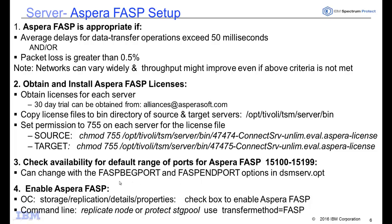You'll then need to enable Aspera FASP either by going into the Operations Center under Storage → Replication → Detail Properties and turning on Aspera FASP, or by setting up a replication pair inside the Operations Center. However, if your replication pairs are already set up, you can simply use the command line replicate node or protect storage pool command with the option transfer method equals FASP. This works for any command line, scripted, or scheduled replications and protect storage pools you have.